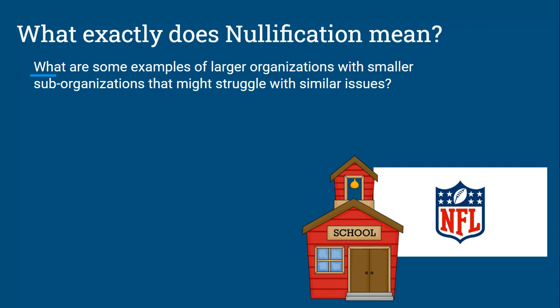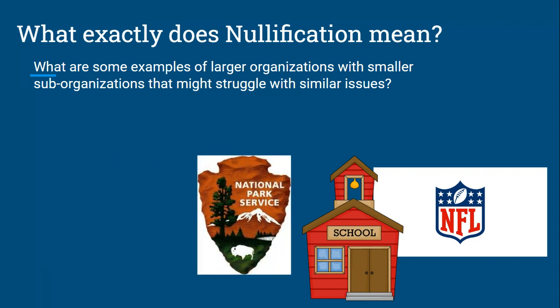Another example is schools — we have administration and school-wide rules, and then within the school you have classrooms where teachers make their own rules. And finally, the National Park Service is a large federally run service — that would be the federal government — and then individual parks, where you've got park rangers and local leadership making decisions. For the purposes of this video, let's talk about schools, since that's the most familiar to us.